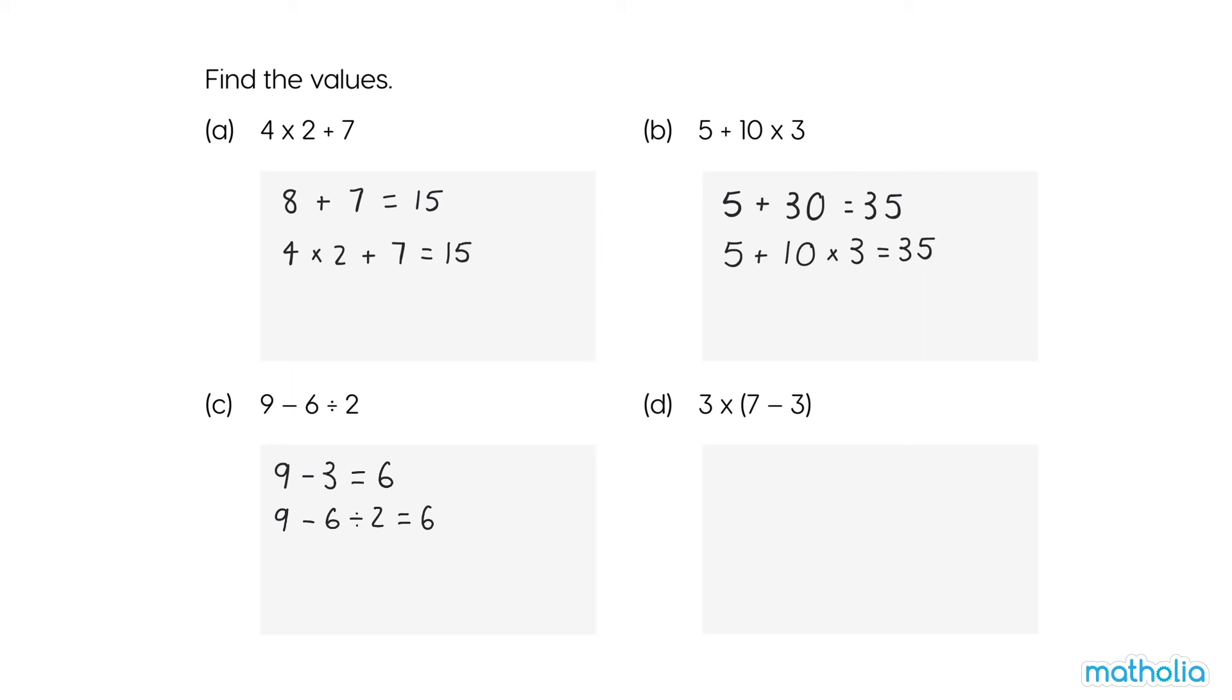D. 3 times open parenthesis 7 subtract 3 close parenthesis. Do the operation in parentheses first. 7 minus 3 equals 4.